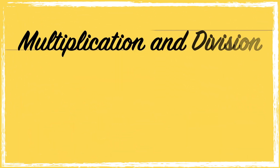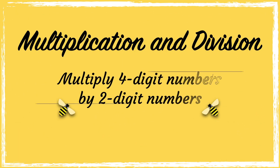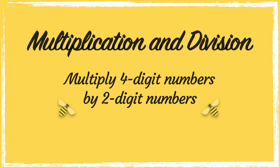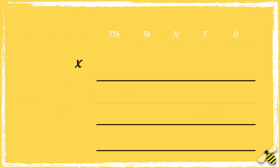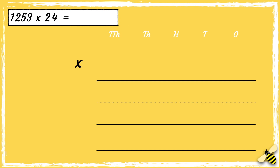In this video we're going to be multiplying four-digit numbers by two-digit numbers. Here is a number sentence: one thousand two hundred and fifty-three multiplied by twenty-four. One thousand two hundred and fifty-three has one thousand, two hundreds, five tens and three ones. Twenty-four has two tens and four ones. Now that we're set up, we're ready to multiply. First we'll multiply four by three.